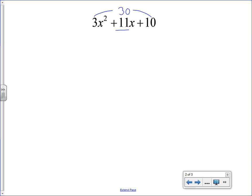We could use 2 and 15, but 2 and 15 don't add up to 11. The pair that does is going to be 5 and 6. So 5 times 6 multiplies to make 30, and 5 plus 6 adds up to that 11 that we're looking for in the middle.